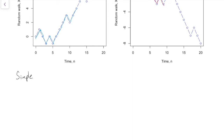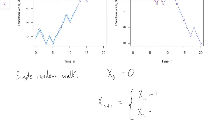The simple random walk has that we start from zero, so x_0 equals zero, and then at any point the next step, x_{n+1}, is either the previous step x_n minus one, or the previous step x_n plus one, and it goes down one with probability q, and up one with probability p, where q is one minus p. Note how this is very clearly a Markov process, because it satisfies the Markov property that the next step x_{n+1} depends on the previous step x_n, but it doesn't depend further on x_0, x_1, x_2, x_3, x_4. It just matters where we are now, and the history isn't important.